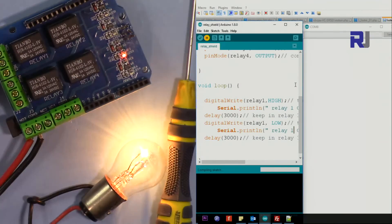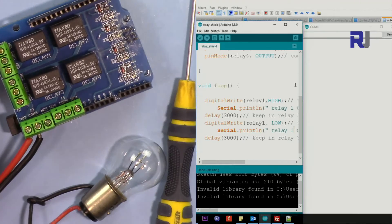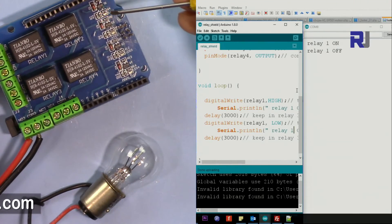Okay, so let me change the code here and then upload it. Now this is not connected to relay 1, but you will see the relay 1 light here. Okay, so the relay 1 is on now, and then off.